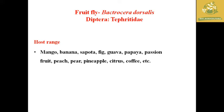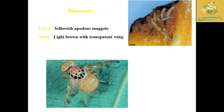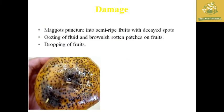The next pest is the Fruit Fly, where the scientific name is Bactrocera dorsalis, belonging to the family Tephritidae and order Diptera. Regarding its bionomics, the larva is an autophagous maggot which is yellowish in color, and the adult is light brown with transparent wings. Fruit fly has a wide host range other than papaya, making control without managing host plants difficult.